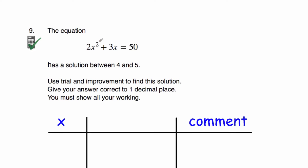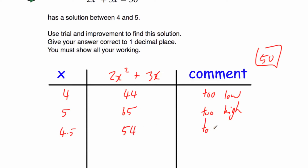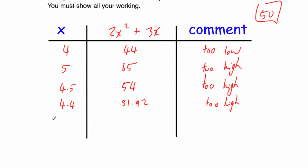Question 9: the equation 2x squared plus 3x equals 50 has a solution between 4 and 5. Use trial and improvement to find a solution to one decimal place. Let's try 4: 2 times 4 squared plus 3 times 4 equals 44 — too low. Let's try 5: 2 times 5 squared plus 3 times 5 equals 65 — too high. Let's try 4.5: that equals 54 — too high. Let's try 4.4: that gives 51.92 — too high. Let's try 4.3: 2 times 4.3 squared plus 3 times 4.3 equals 49.88 — too low.